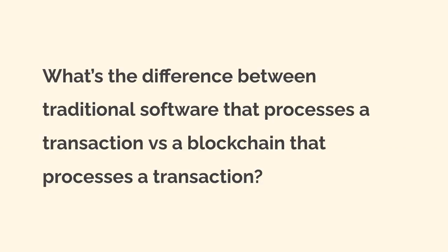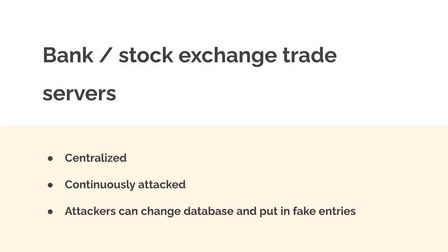You may be wondering: what is the difference between traditional software and a blockchain for processing transactions? Why use a blockchain instead of a bank? A traditional server like a bank or stock exchange is centralized — the bank is the central entity. These servers are continuously attacked and attackers can put in fake entries. Also, fees are higher and you're limited by time — you have to wait for the bank or stock exchange to open. The bank gets a fee and controls the transaction.